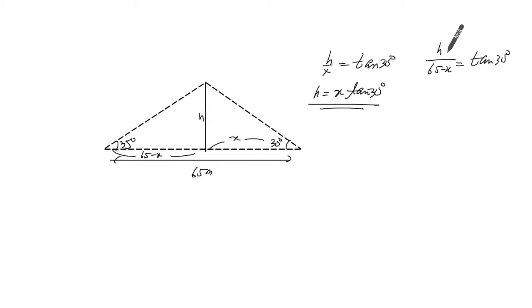What we're going to do is replace that h with this. And before I do that, though, I'm going to actually multiply both sides by 65 minus x. So this is a tangent of 35 here. This is tangent of 35 degrees. And this h here, I'm going to replace it with this.